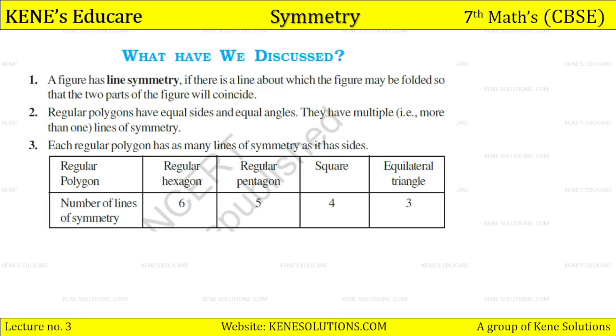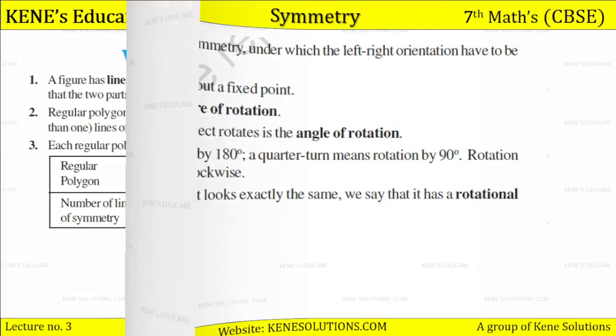So for regular polygons: a regular hexagon has 6 lines of symmetry, a regular pentagon has 5, a square has 4, and an equilateral triangle has 3 lines of symmetry.